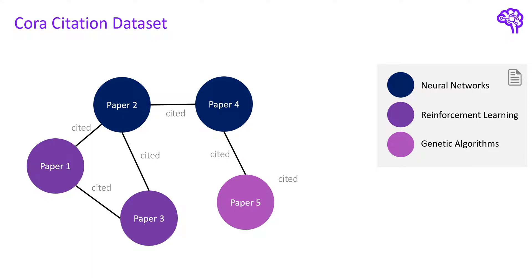Now let's look at the prediction problem. Assume we have another paper in the database, cited by paper 5, and we don't know its publication type. The task is to classify this node using the knowledge in the graph. Intuitively this new node would likely be another paper about genetic algorithms, as it's connected to paper 5 and completely unrelated to papers 1, 2, 3, and 4 on neural networks and reinforcement learning. We can use a graph neural network to perform this prediction, using both structural information and node features such as the word vector.